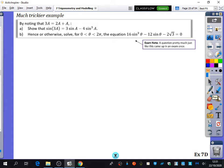It says, by noting that 3a equals 2a plus a, show that sin(3a) equals 3sin(a) minus 4sin³(a). So this is going to be a question that uses both the addition formulae and the double angle formulae. It says, by noting this thing.